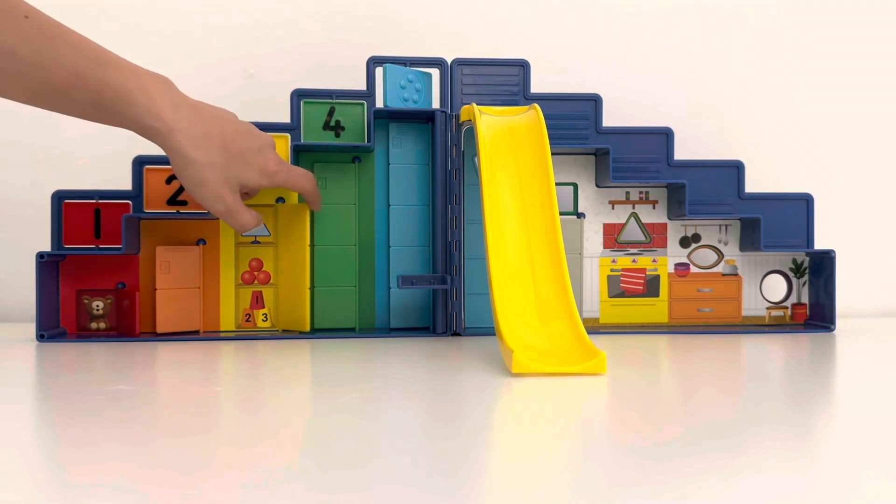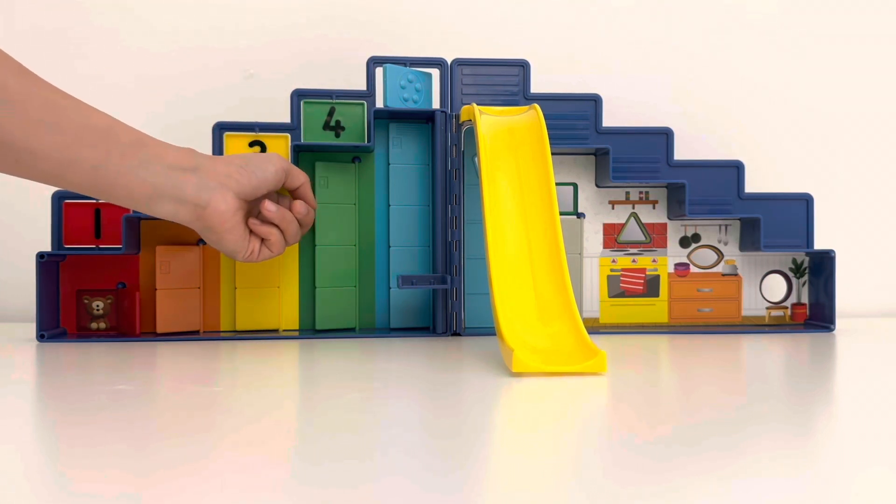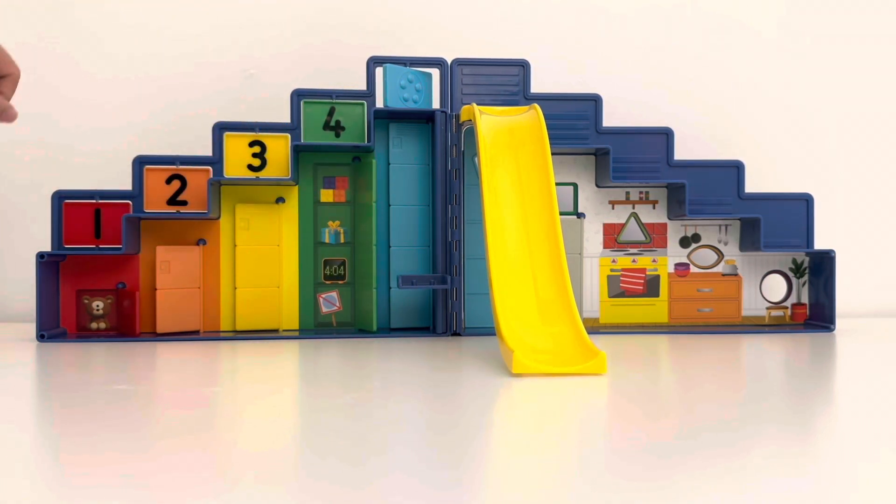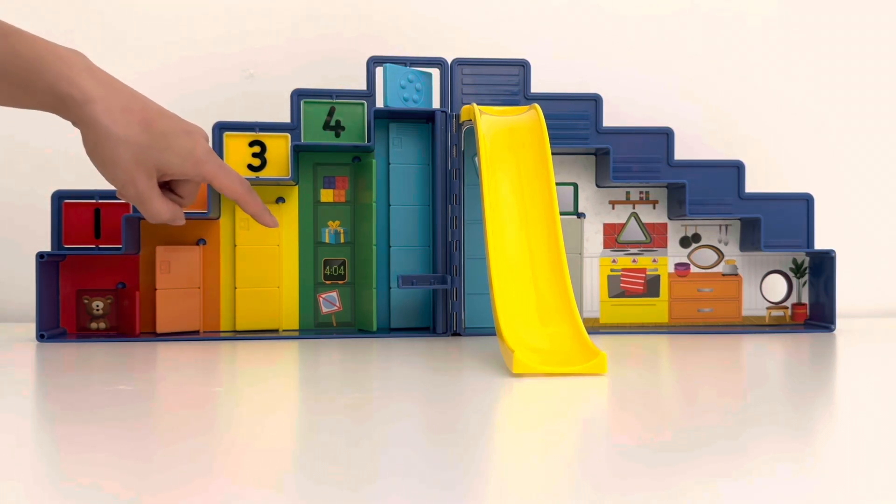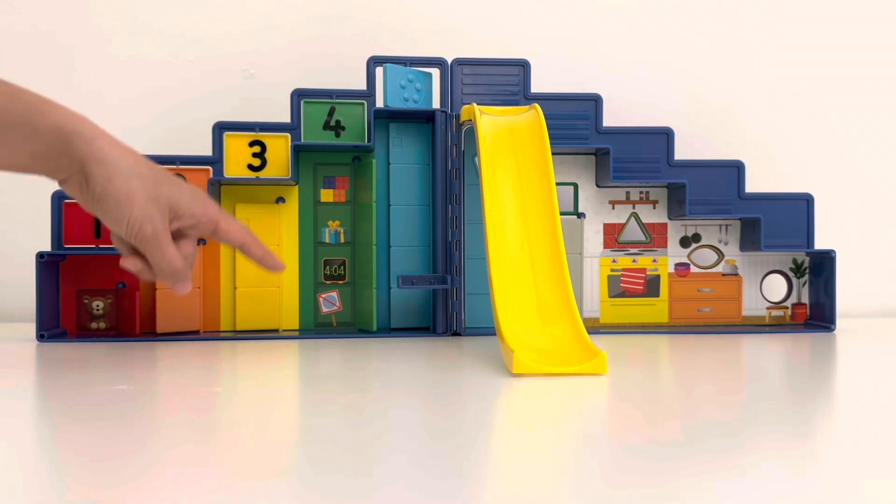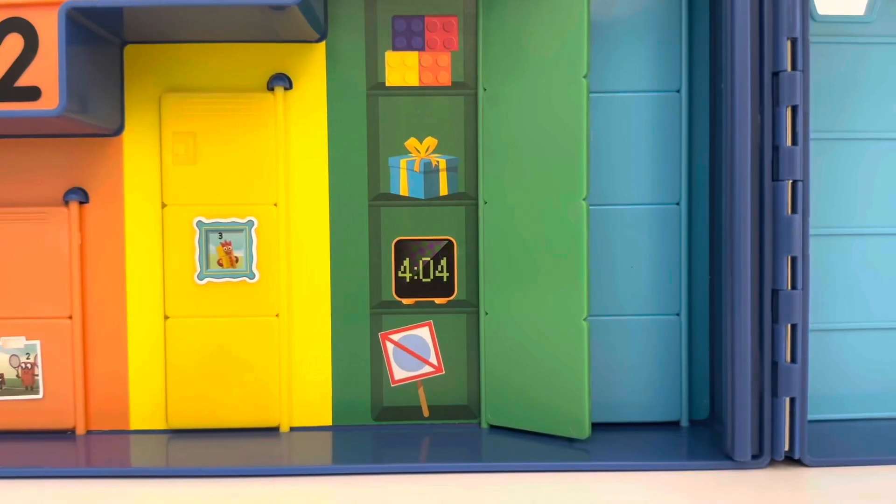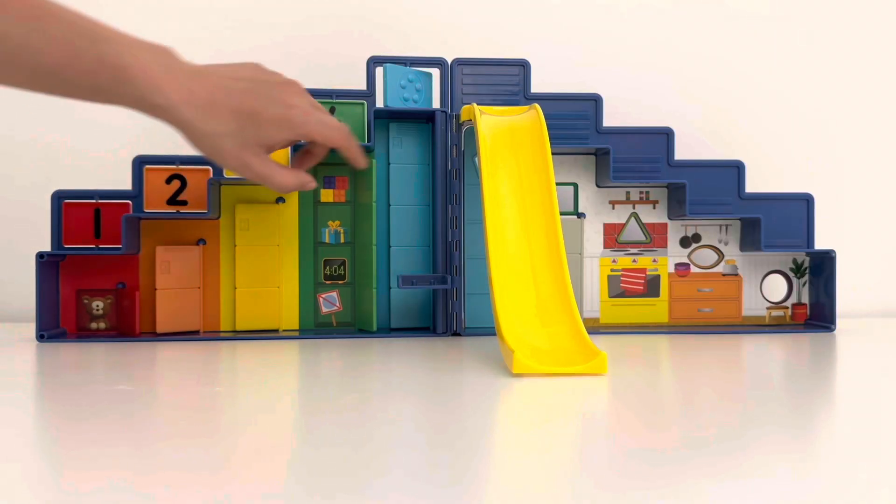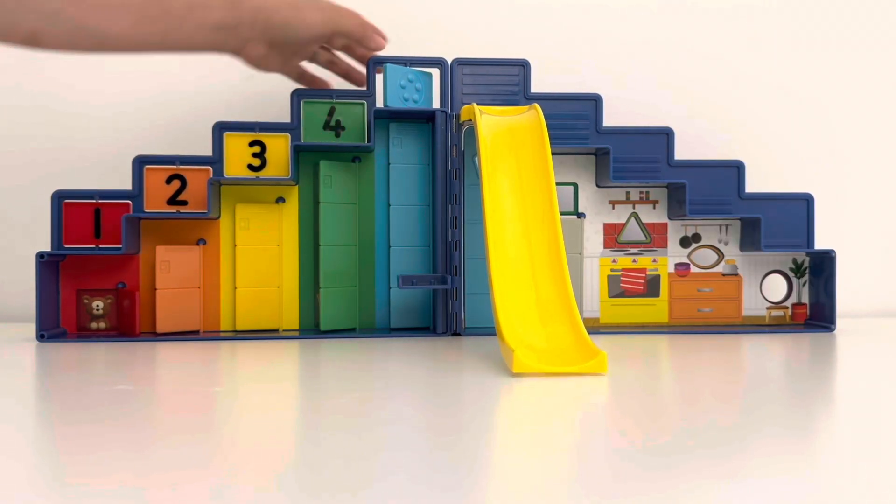Next up it's four's locker. It's green. He has four bricks on the shelf and on the second one he has a square present. And on the third shelf a clock and then a sign that says no round things.